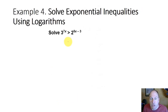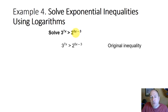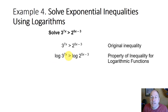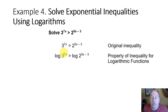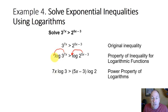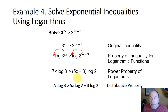Let's solve an exponential inequality using logarithms. If we have 3 to the 7x power greater than 2 to the 5x minus 3 power, we take the log base 10 of both sides. Using the power property of logarithms, this becomes 7x times the log of 3 greater than 5x minus 3 times the log of 2. We then apply the distributive property: 5x minus 3 times log 2 becomes 5x times log 2 minus 3 times log 2.